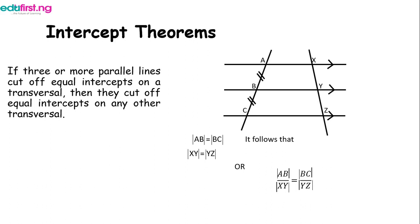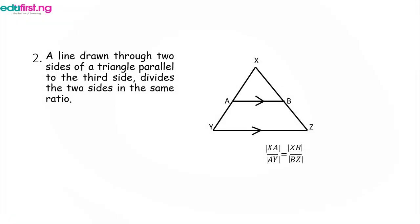The second theorem states that a line drawn through two sides of a triangle, parallel to the third side, divides the two sides in the same ratio. If we have triangle XYZ and line AB drawn inside the triangle parallel to line YZ, then XA/AY equals XB/BZ.